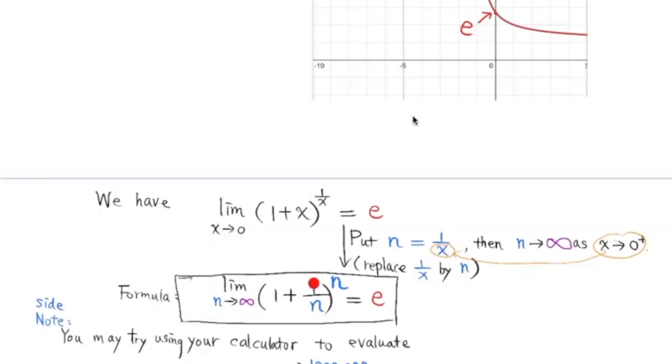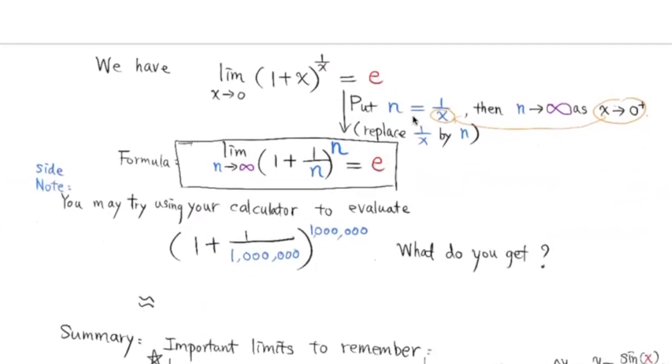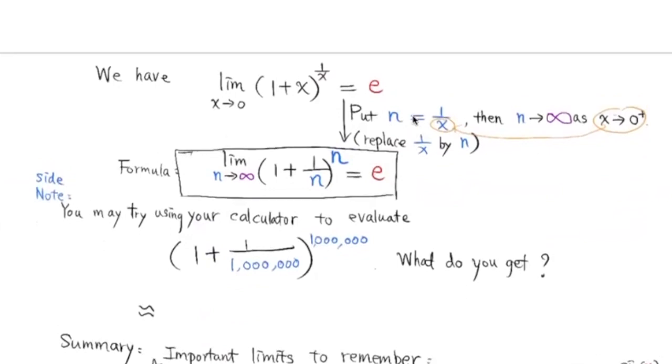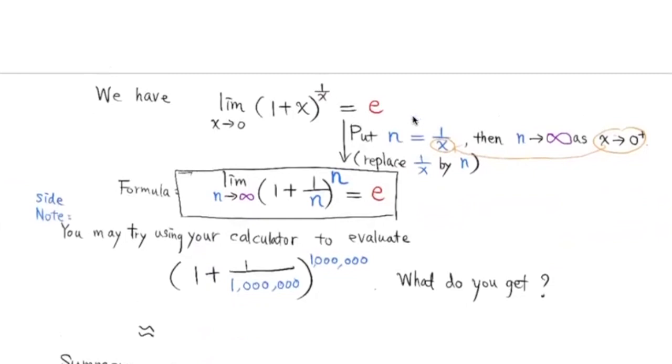Since x and n are reciprocals, x is replaced by 1 over n, and 1 over x is replaced by n. So this limit can be written in this form. So the limit of 1 plus 1 over n to the n power as n goes to infinity is equal to e.